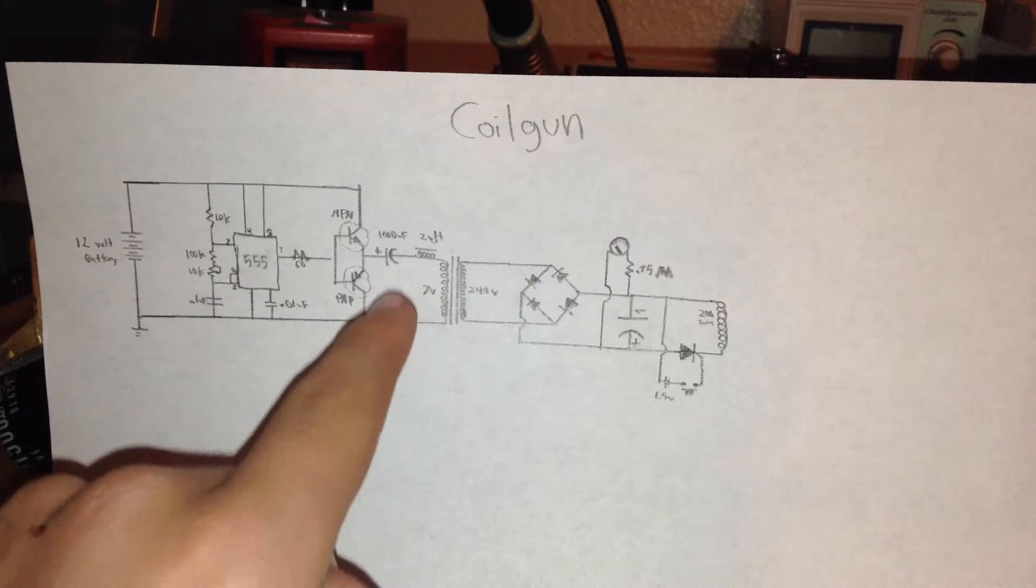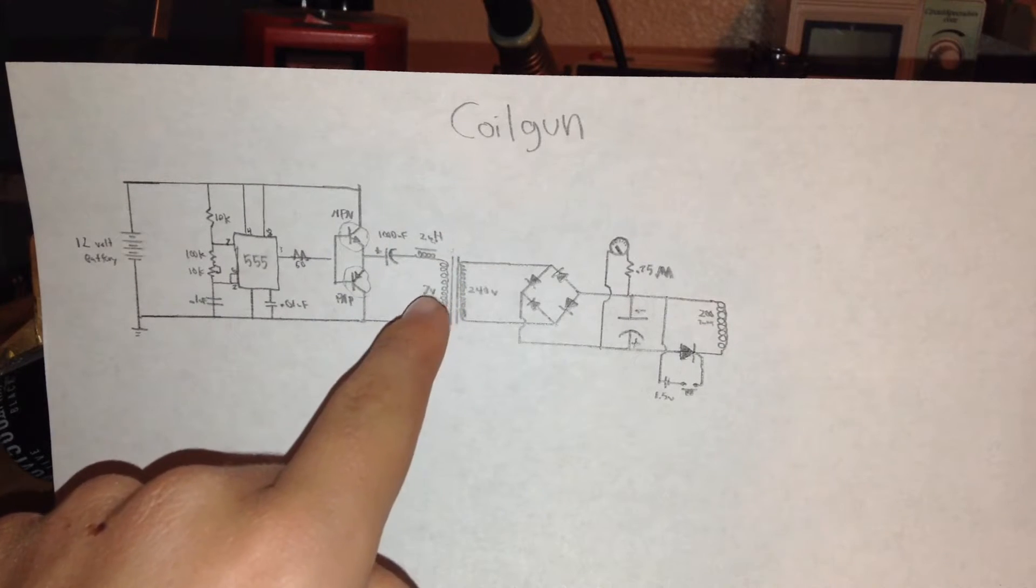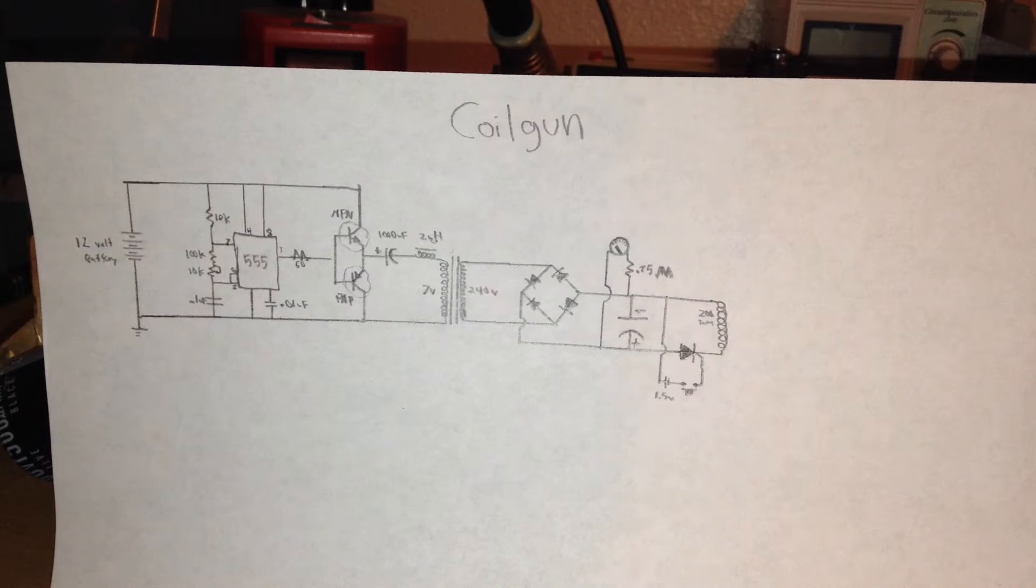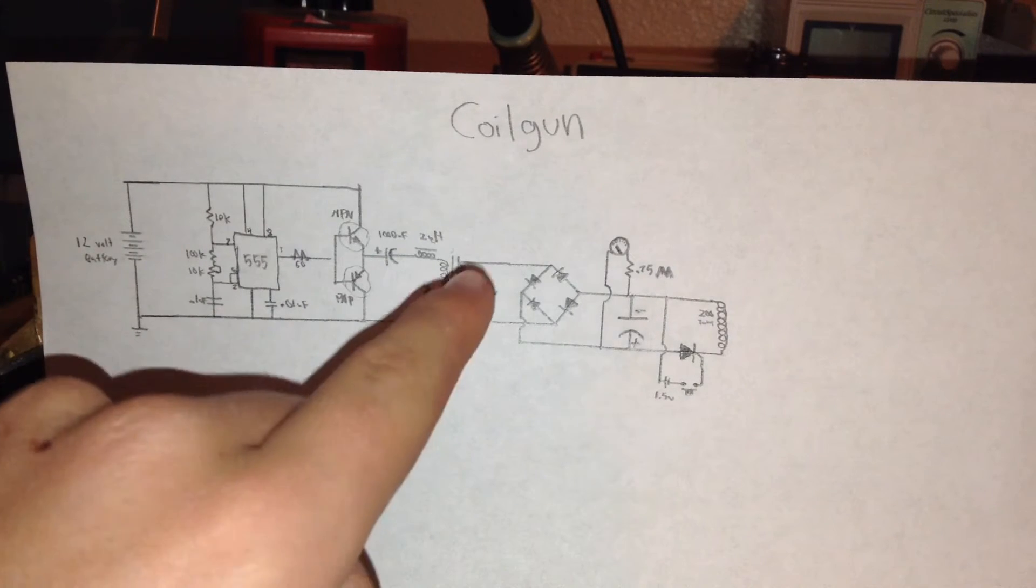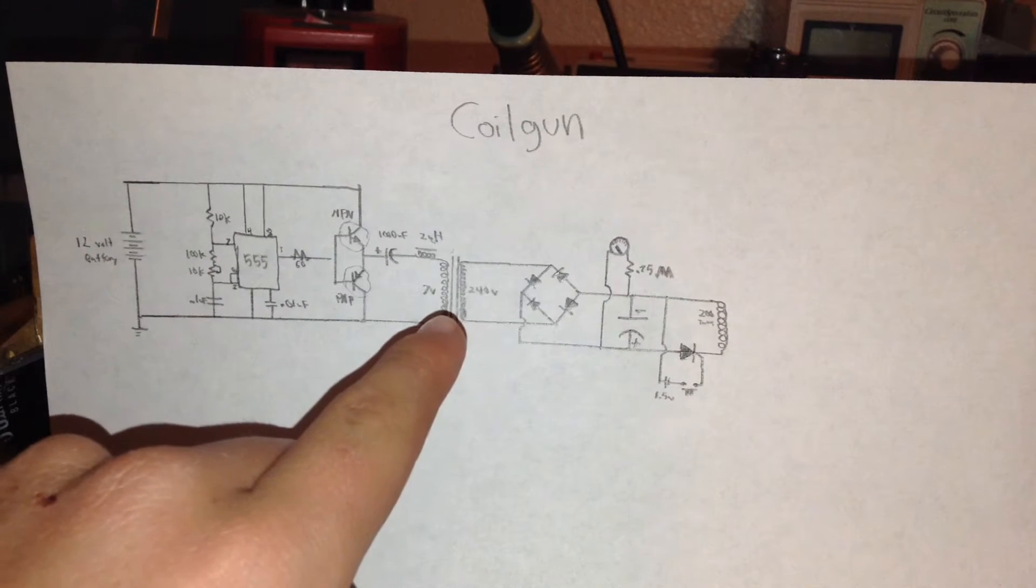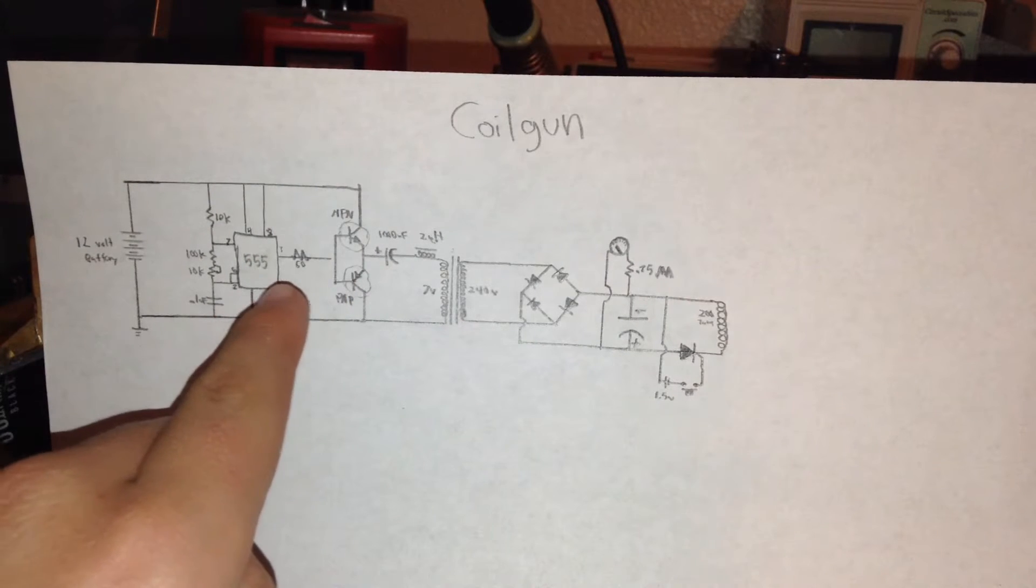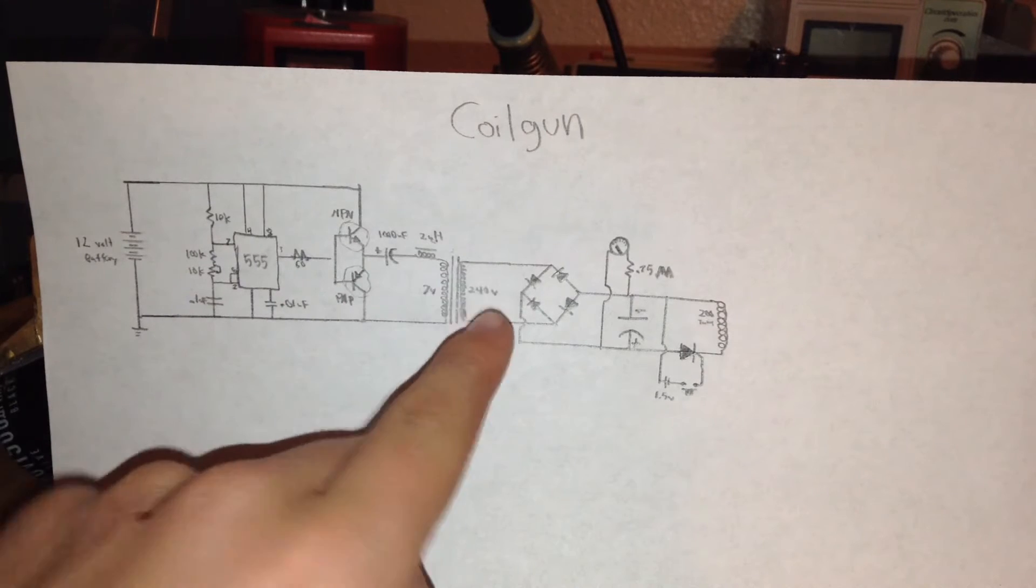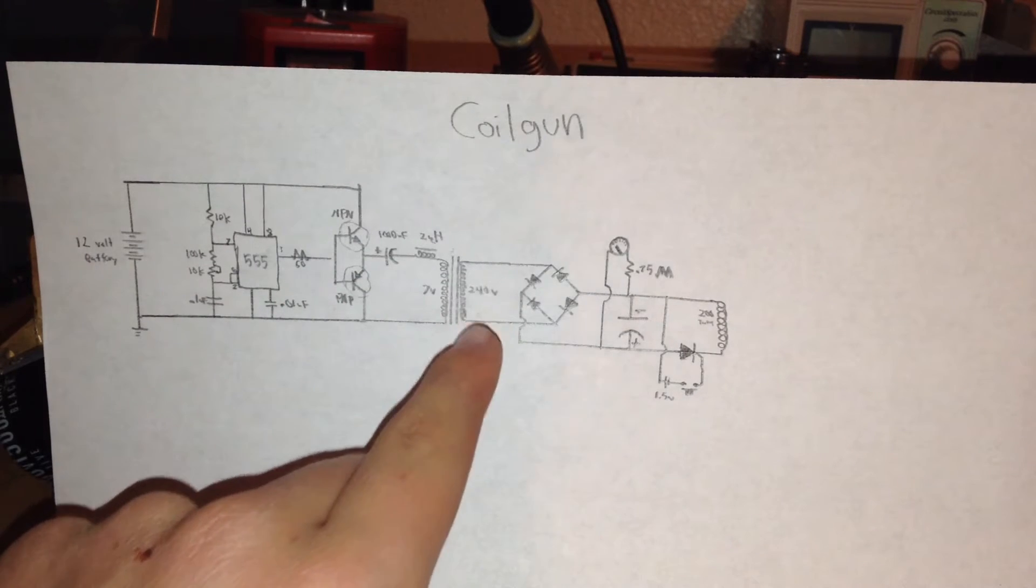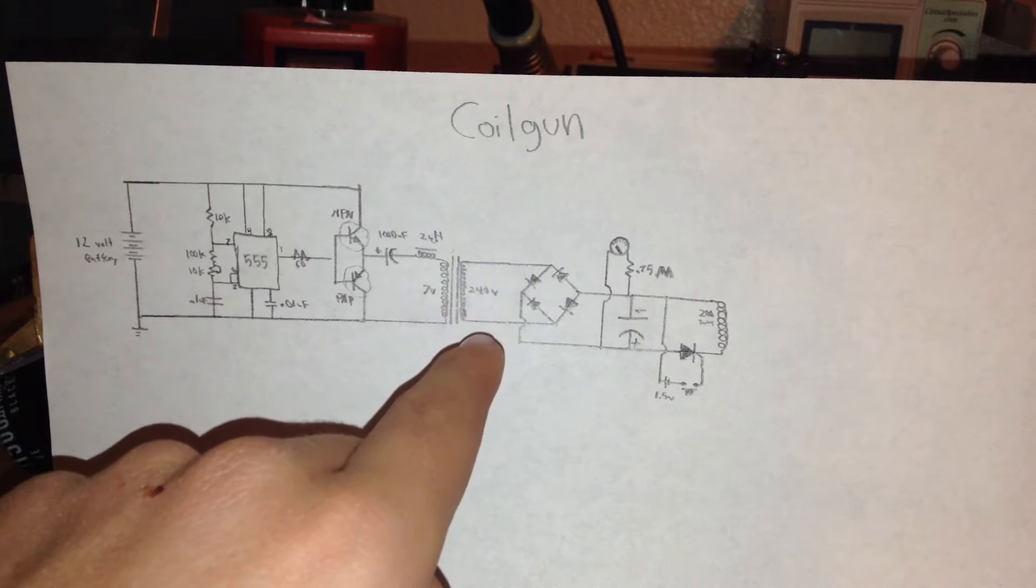This sine wave is then put through a transformer. This transformer is 7 volts to 240 volts. I found it in an exit sign. It doesn't actually put out 240 volts because the 555 inverter only puts out about a 3 volt sine wave. So this makes somewhere about a 150 to 170 volt output.